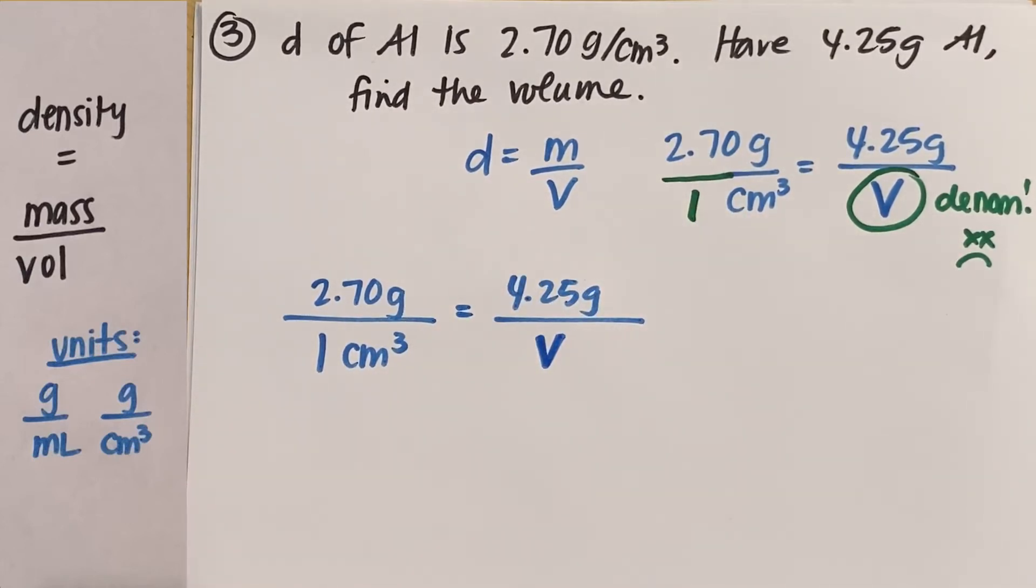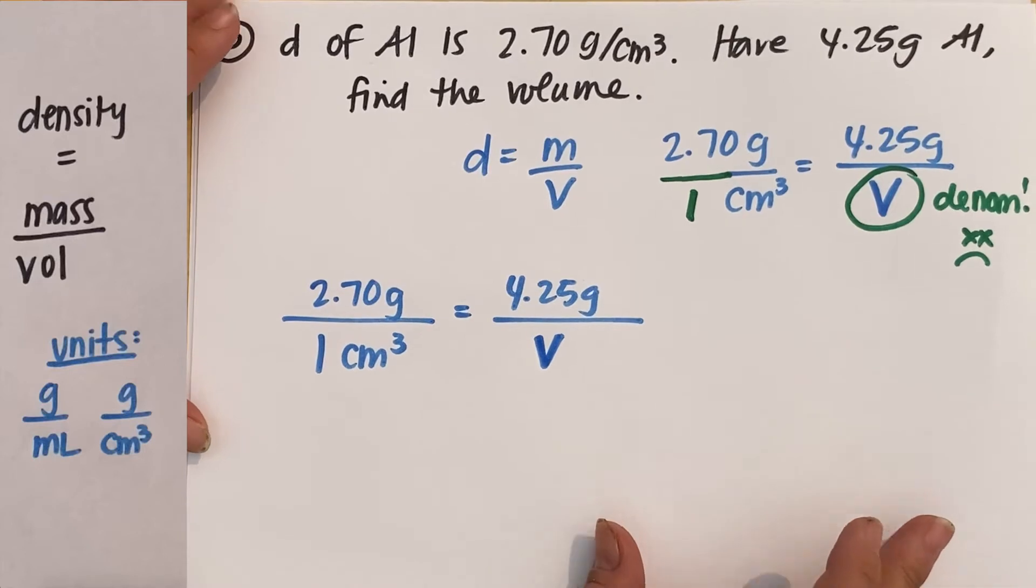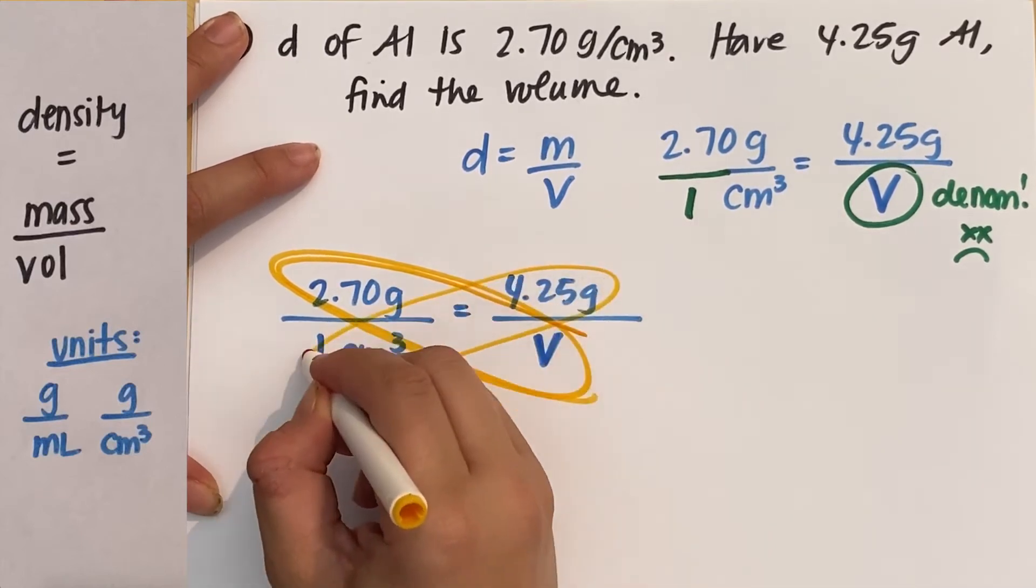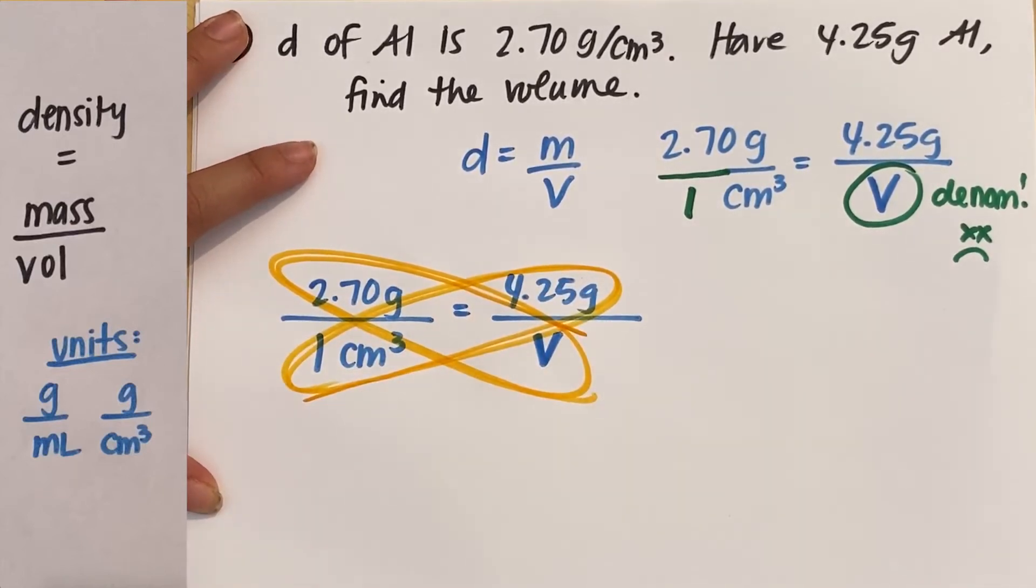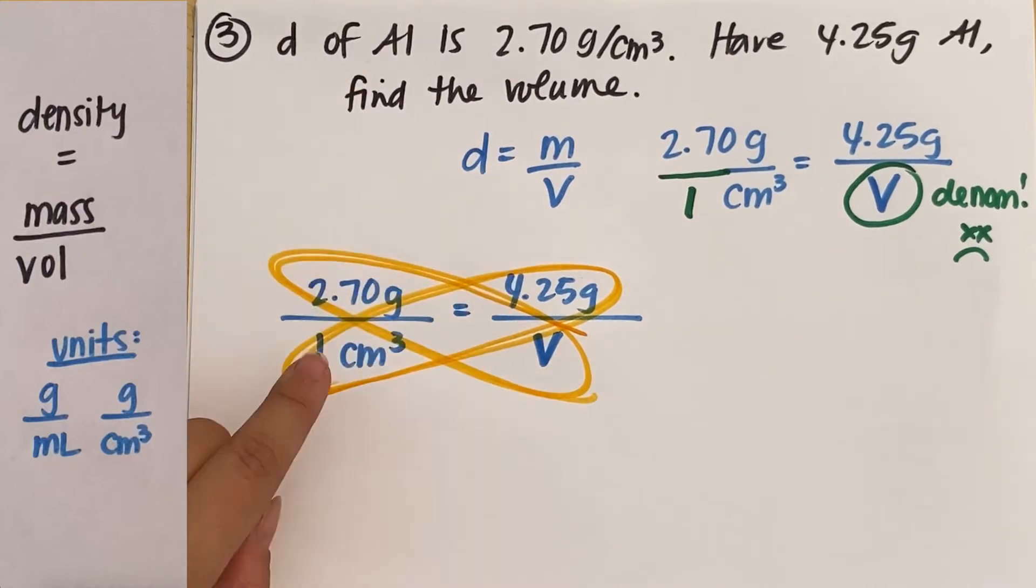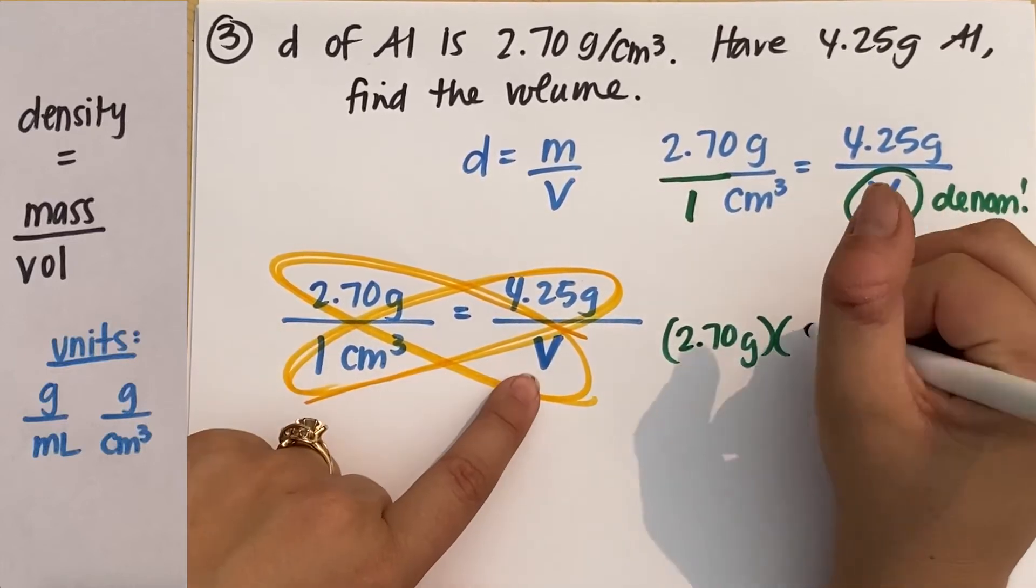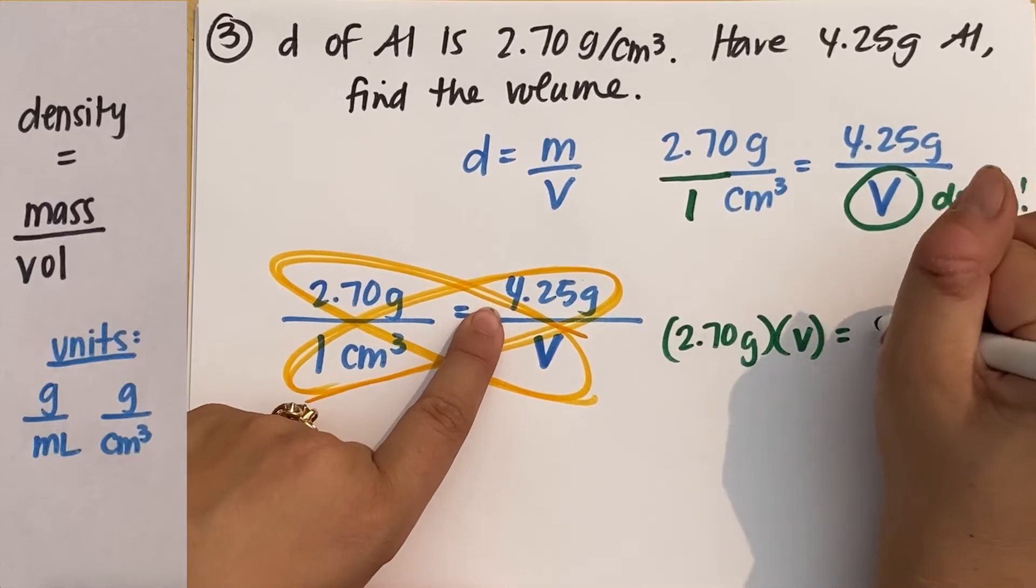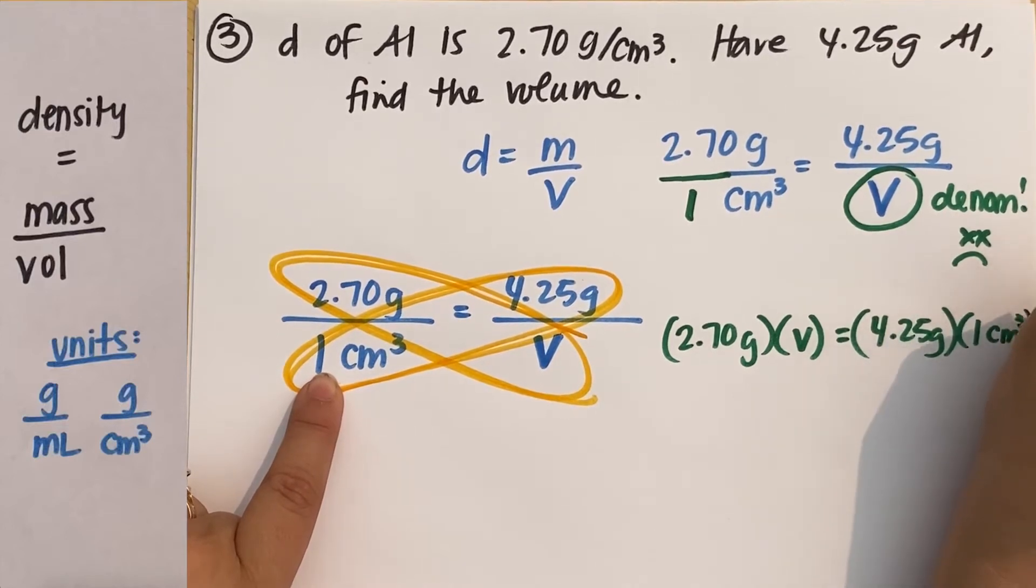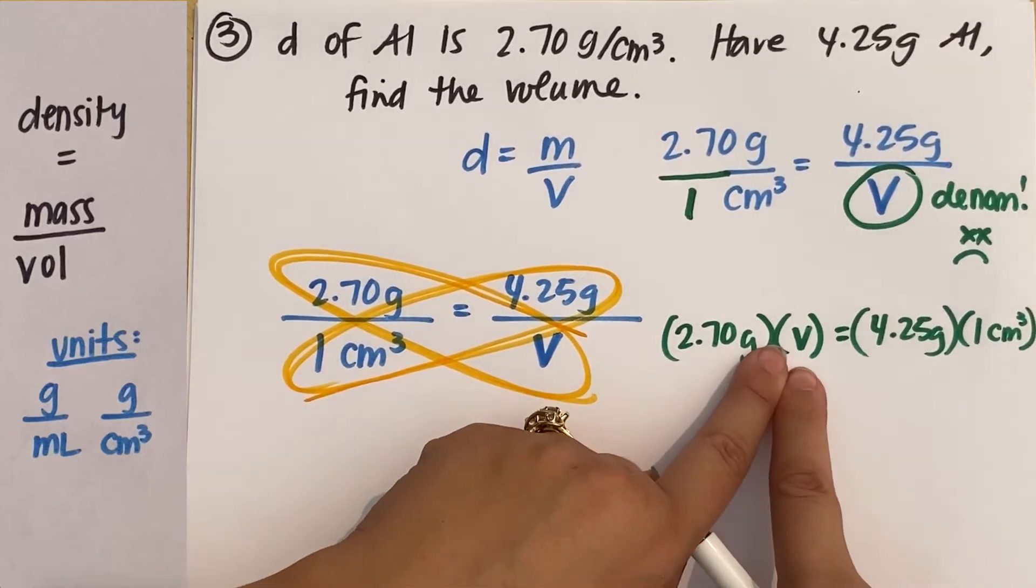So if I wrote this out as 2.70 grams for every one centimeter cubed, that's going to equal 4.25 grams for every, I don't know how much my volume is, for V. And now to solve, we do sometimes it's called the butterfly method or the crisscross method. However you may have learned from elementary school, I think is when they do this. So you'll take these two guys multiplied by each other equals these two guys multiplied by each other. Then you won't have your unknown, what you're solving for, on your denominator. So if I did this correctly, I would get 2.70 grams times my volume equals 4.25 grams times one centimeter cubed.